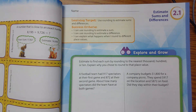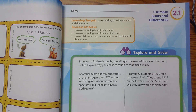Let's all turn to page 33 in your Big Ideas math book. At the top you should see lesson 2.1, Estimate Sums and Differences. We're going to estimate to find each sum by rounding to the nearest thousand, hundred, or ten, and explain why we chose to round to that place value.